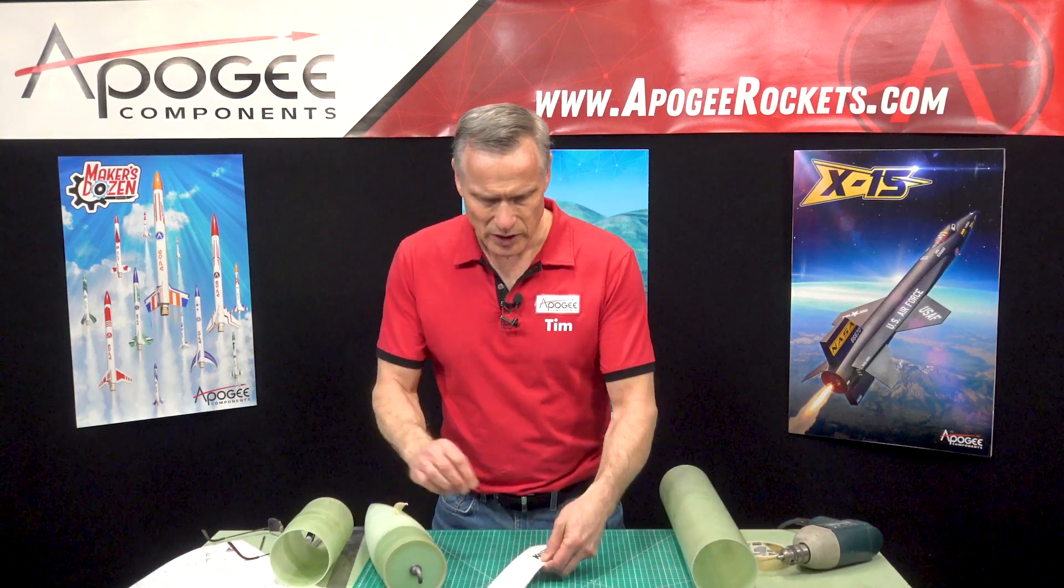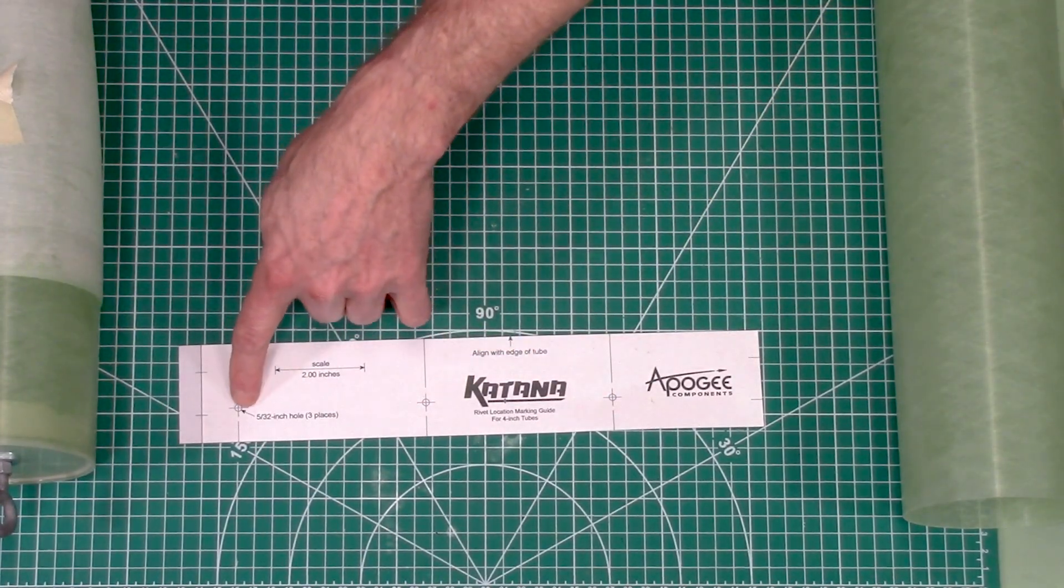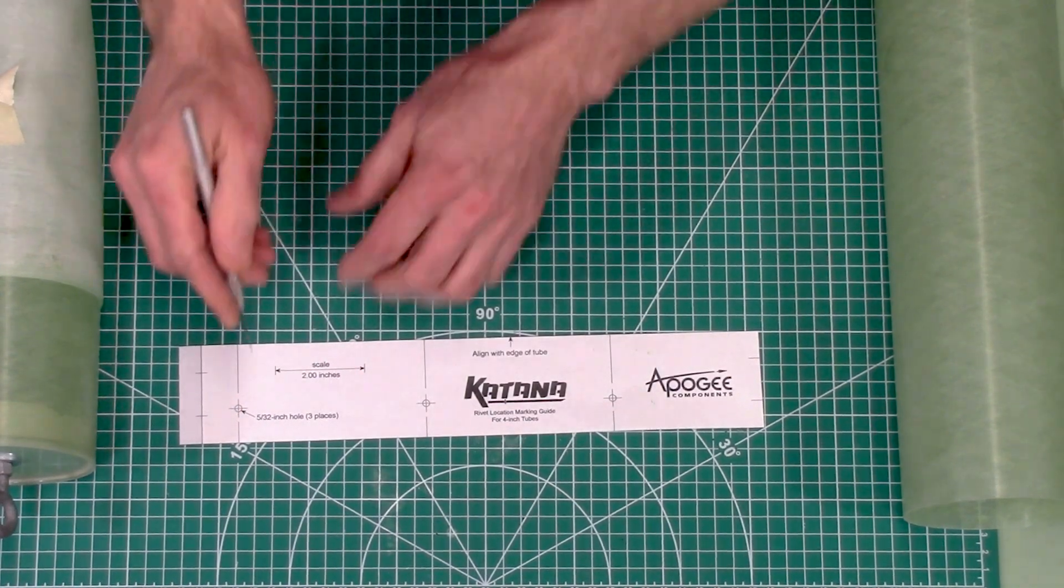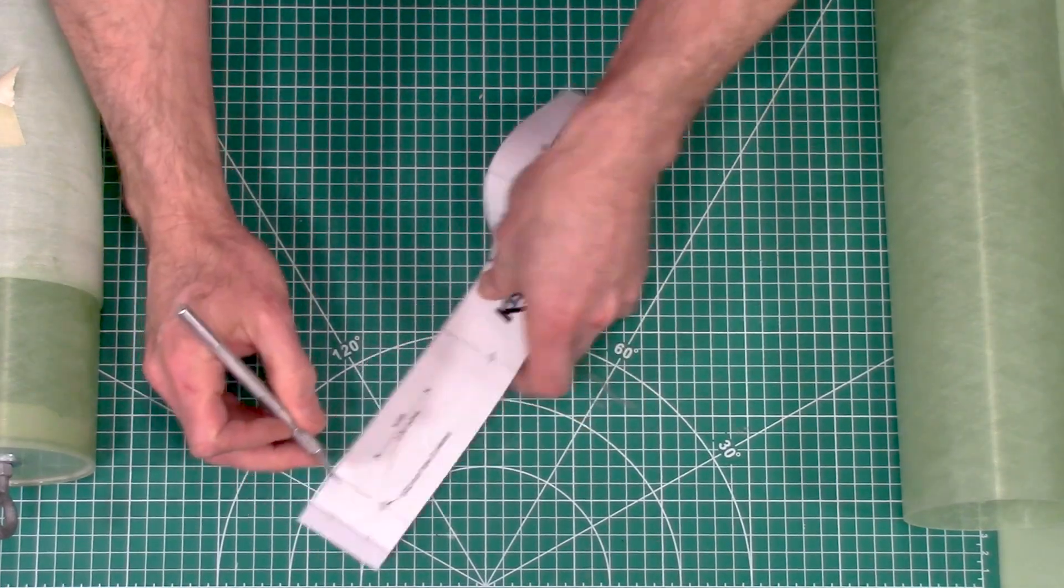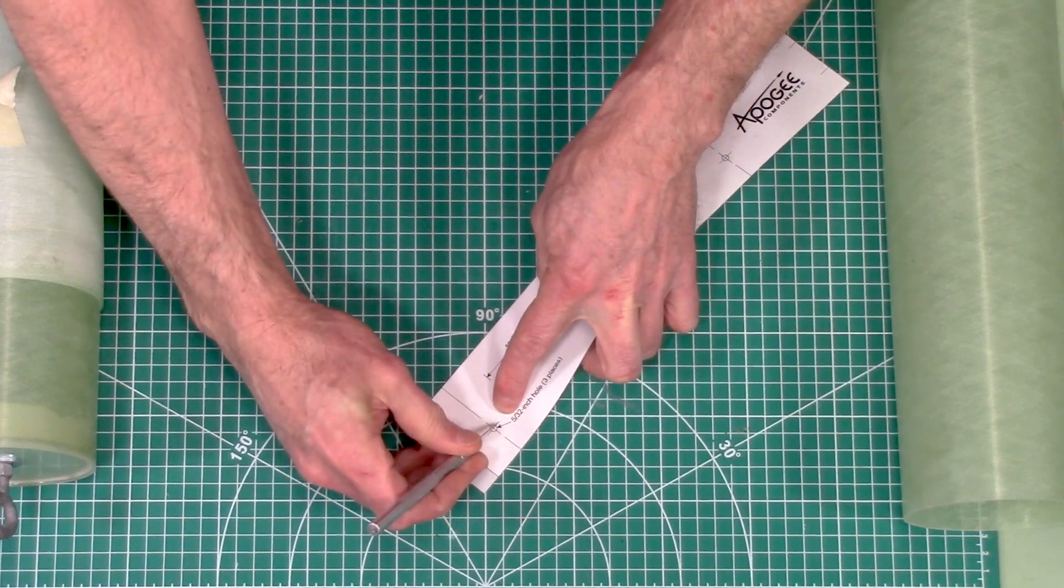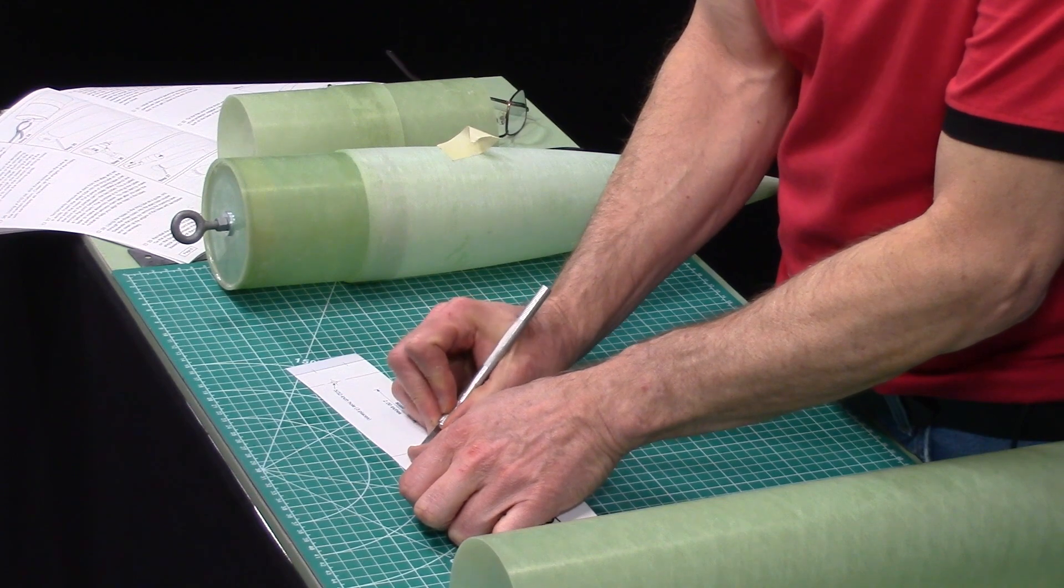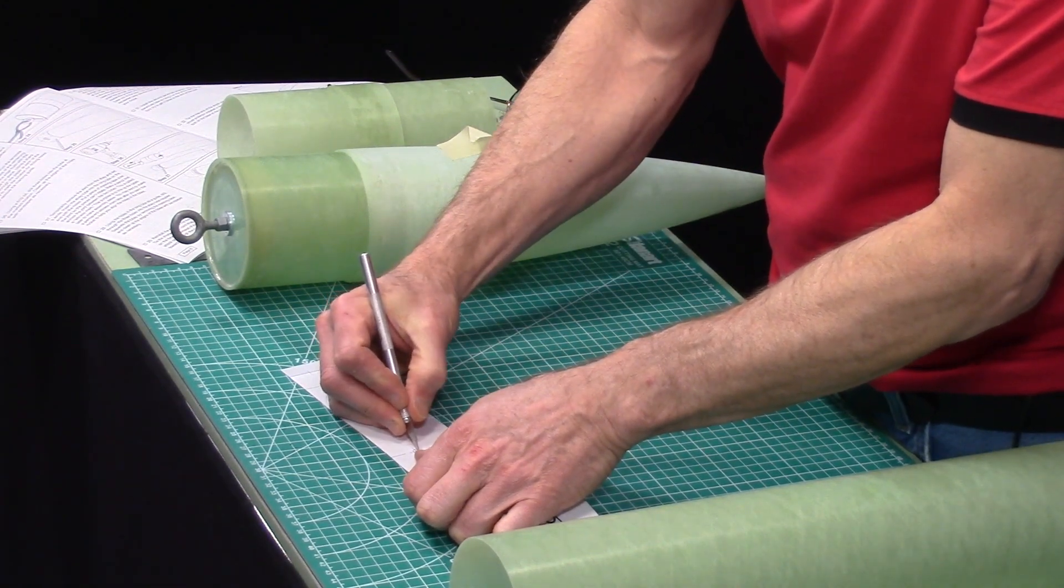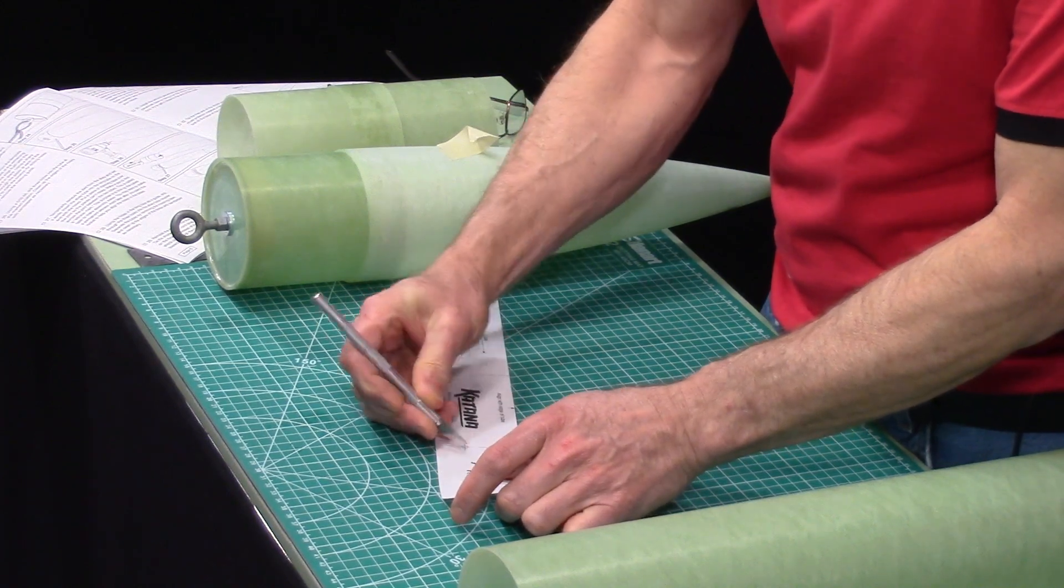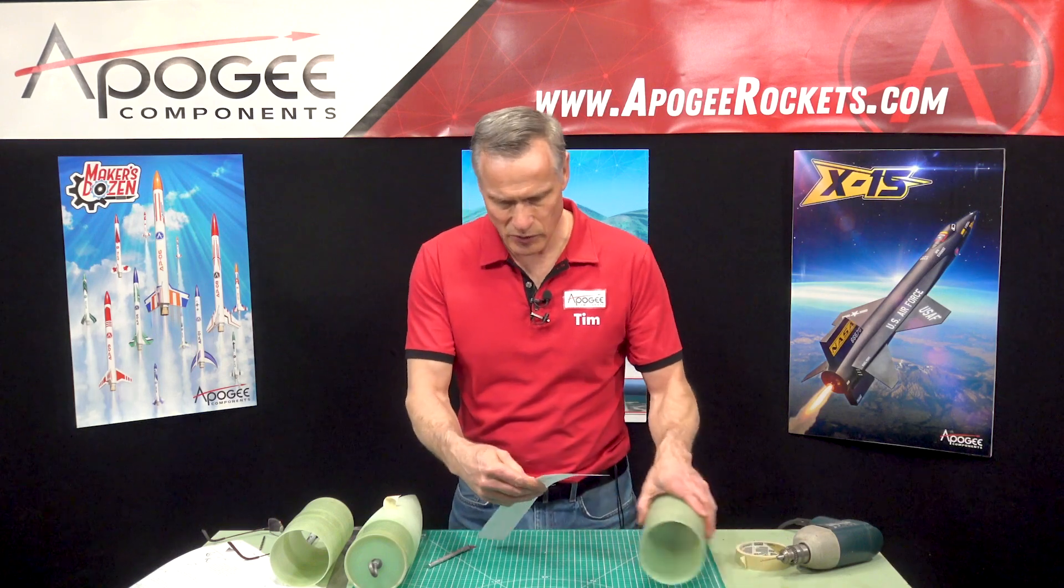Before I do that, on here we have some holes that we want to drill. Now you can either cut these holes out. What I'm going to do is I'm going to take my knife and see where the crosshairs are. I'm just going to run my knife through those crosshairs and you'll see why I do that in just a minute here. This is so I can mark my tube and there's going to be three holes. So I'm just running it through all three crosshairs and we're wrapping around the tube.